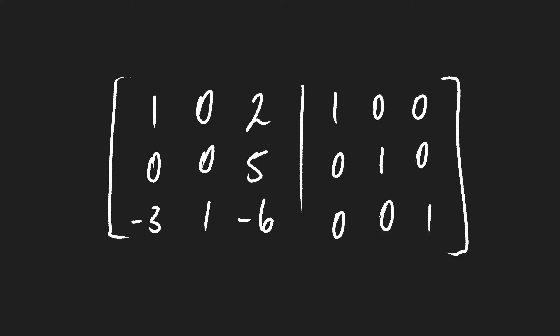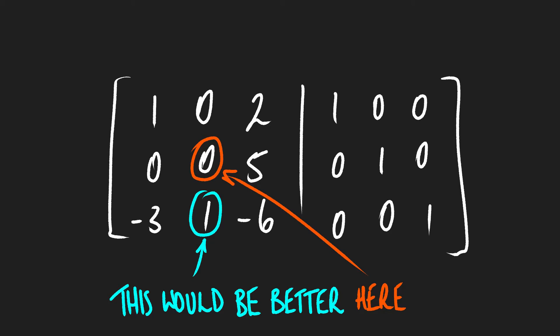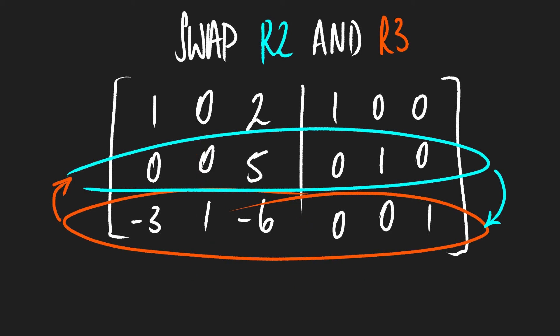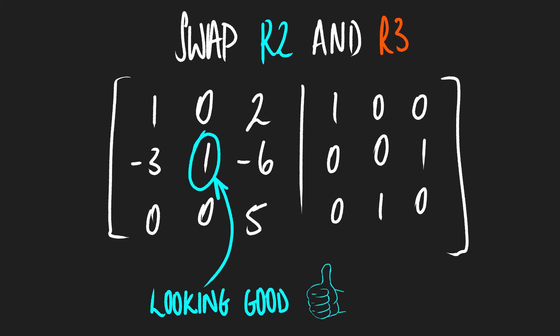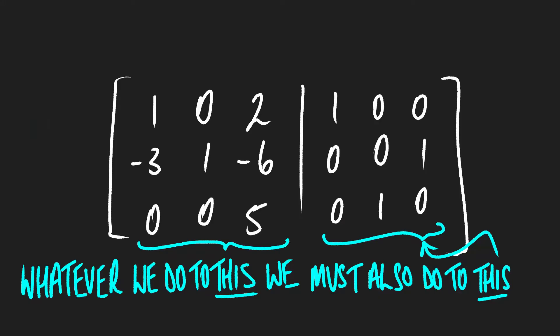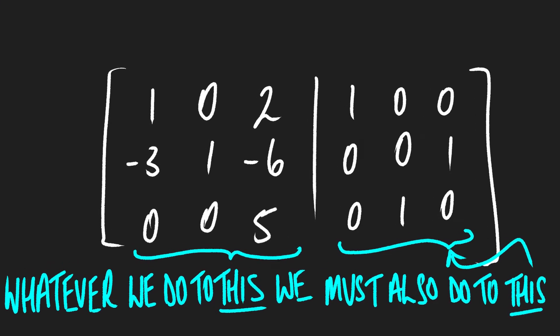Looking at this matrix, we have a 1 in the top left-hand corner, which looks good. We also have a 1 in the middle of the third row. So if we swap the third row and the second row, we now have that 1 in the middle of the second row, exactly where we want it going towards the identity matrix. The key point is that whatever we do to the left-hand matrix, we need to do to the right-hand matrix as well.